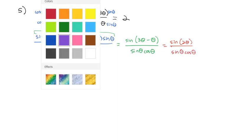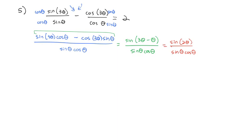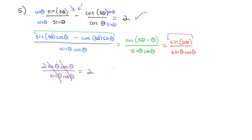Be careful — we cannot cancel the sines because they're not of the same angle. But we do have a double angle formula for sine: sine of 2theta is 2 sine theta cosine theta. So we get 2 sine theta cosine theta over sine theta cosine theta. Now they are the same angle, the sines and cosines divide out, and we're left with 2, which is what the other side of the equation is. We can wrap this proof up with QED. We have proved the two sides are equal.